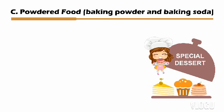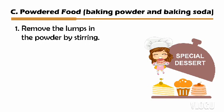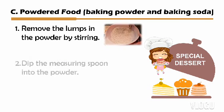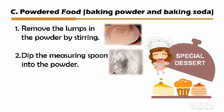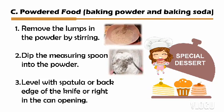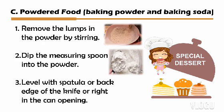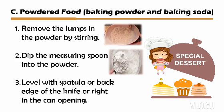The next ingredient is powdered food such as baking powder and baking soda. First, remove the lumps in the powder by stirring. Second, dip the measuring spoon into the powder. Third, level with a spatula, the back edge of a knife, or right at the hand opening.